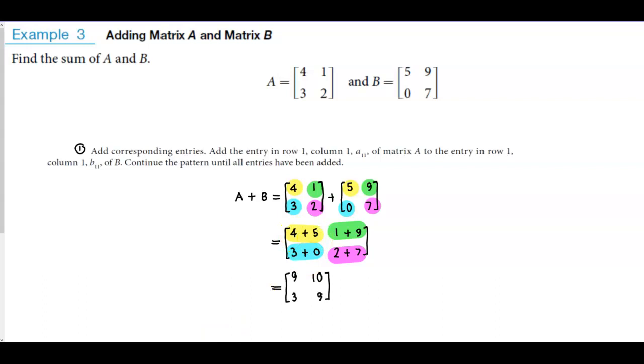And when we add four plus five, we're going to get nine. When we add one plus nine, that gives us ten. When we add three plus zero, that gives us three. When we add two plus seven, that's going to give us nine.